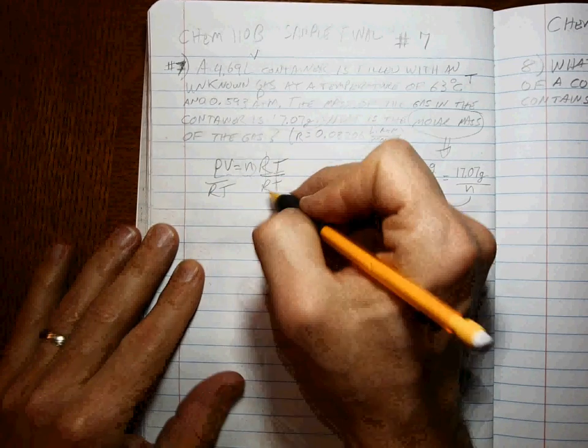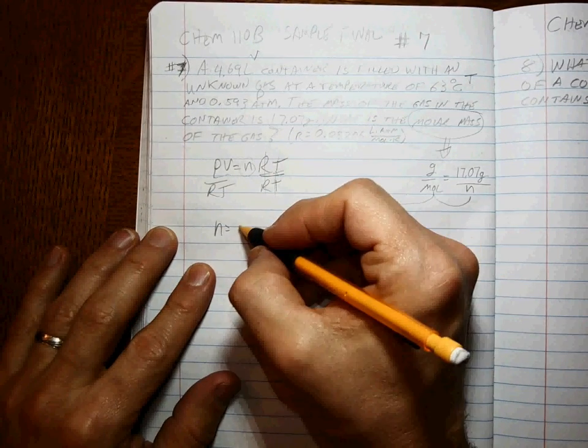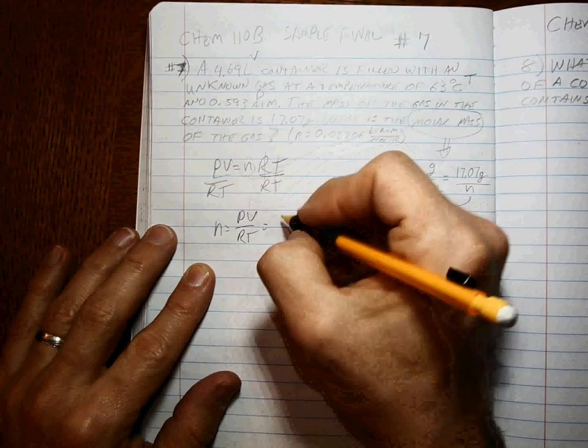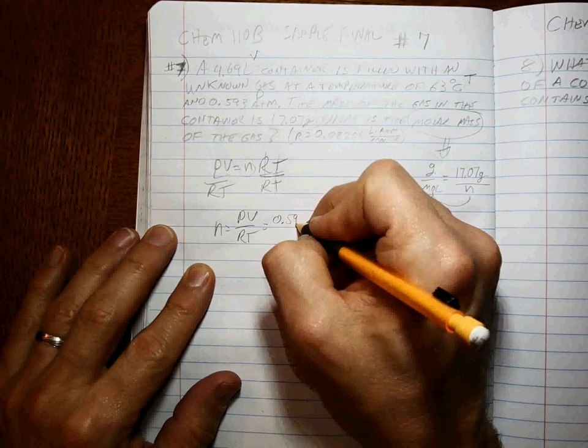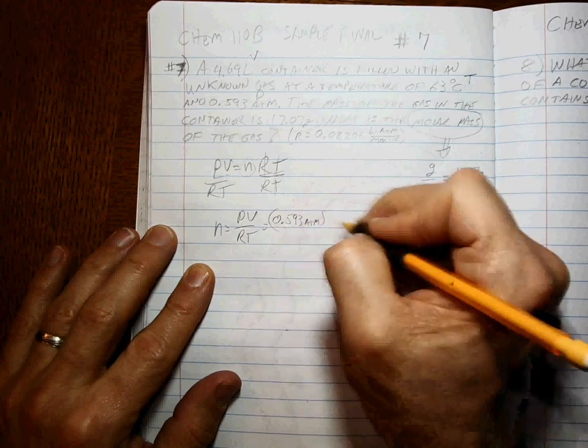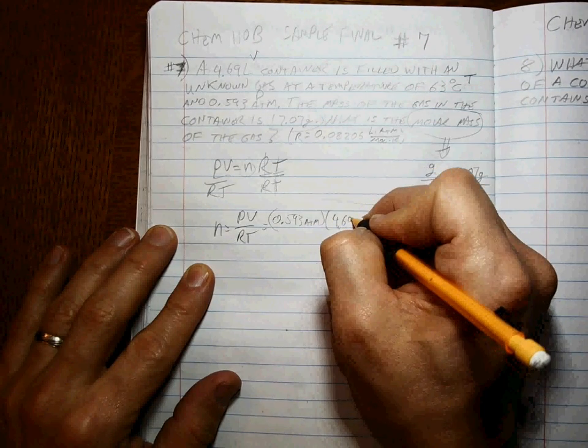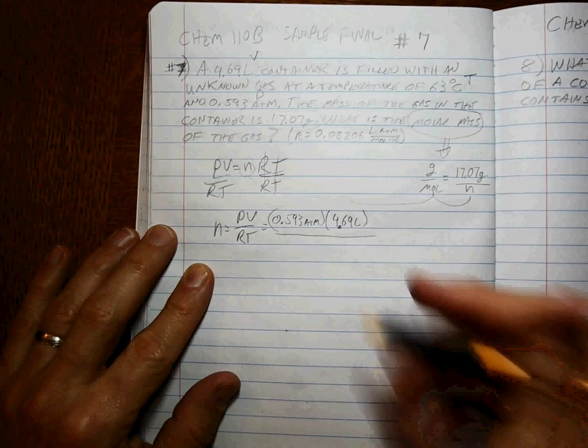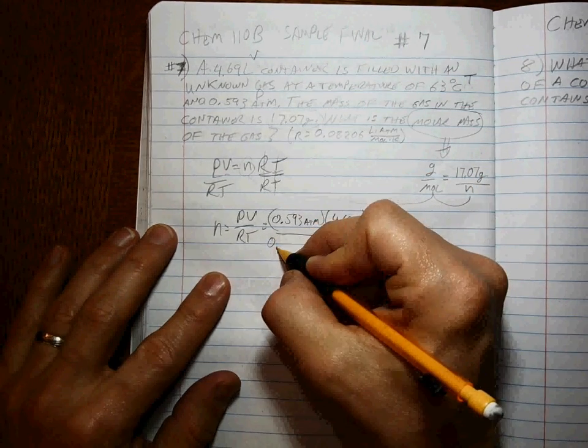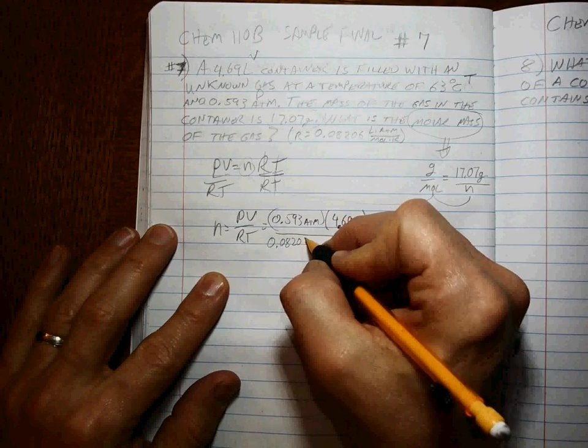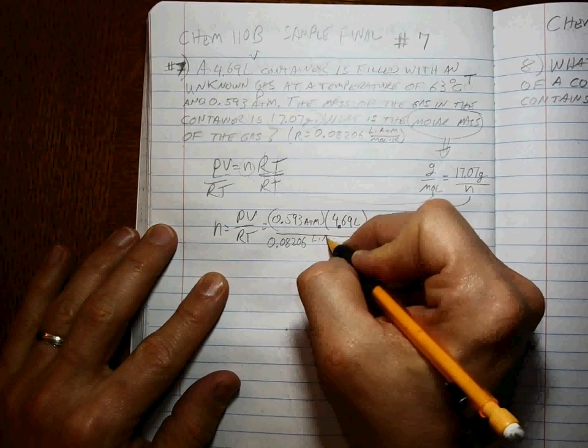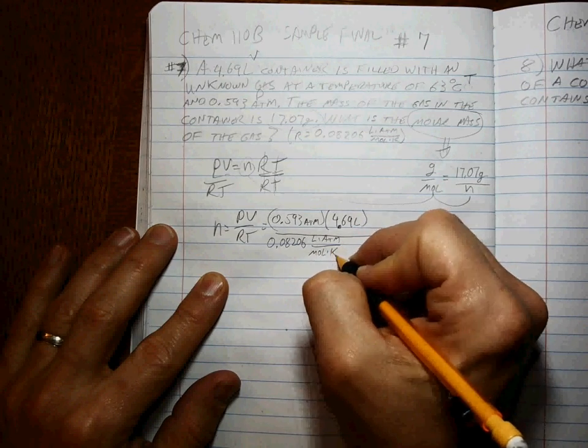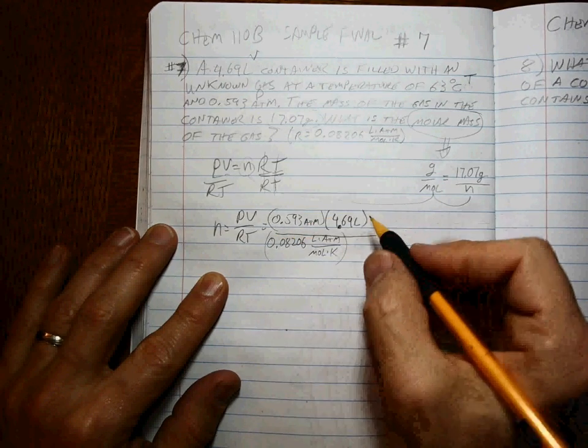Piece of cake. N is equal to PV over RT. The pressure is 0.593 atmospheres. The volume is 4.69 liters. Don't forget, every time you do an ideal gas law problem, you have to use liters atmospheres per mole per Kelvin. You have to use the ideal gas law units.